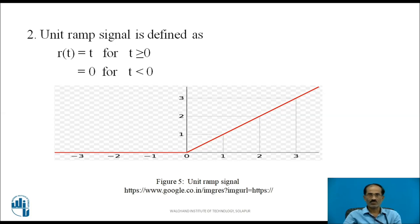The unit ramp signal is defined as r(t) = t for t ≥ 0, and 0 for t < 0. The amplitude is present only from 0 to plus infinity. For example, r(0) = 0, r(1) = 1, r(2) = 2, and so on — the value starts from 0 and grows to plus infinity. Along the negative side, the value is 0 for all t from minus infinity to 0.